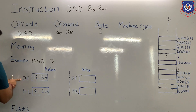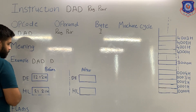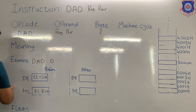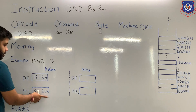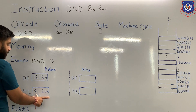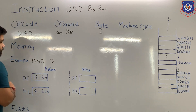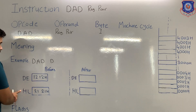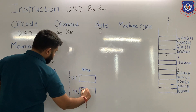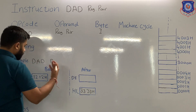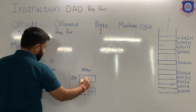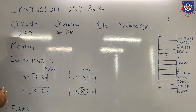Before the execution, the content of DE pair is 1212H — it is a 16-bit value. The content of HL pair is 2121H, again a hexadecimal value. If you convert into binary, you will get a 16-bit value. When this instruction is executed, the content of DE pair will be added with HL pair and the answer will be stored in the HL pair. The answer in the HL pair will be 3333H, and the content of DE pair will remain 1212H.